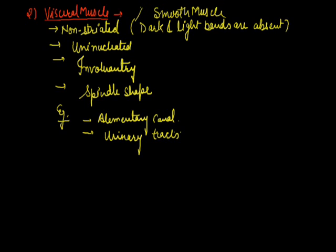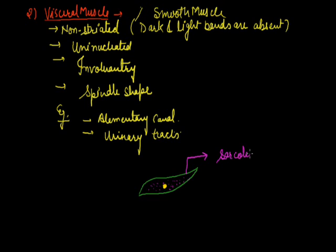Now I will draw the diagram of visceral muscle. It is spindle shaped, containing a single nucleus, and without striations. The outer covering is the sarcolemma, the fluid inside is the sarcoplasm, and the yellow dot indicates the nucleus of the cell.